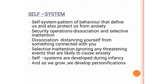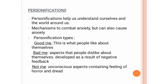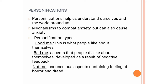Self-systems are developed early in life, during infancy, and as we grow we also develop what Sullivan refers to as personification. Personification helps us understand our self and the world around us — it is a mechanism to combat anxiety but can also cause anxiety. There are three possible personifications: good me, bad me, and not me. Good me is what people like about themselves. Bad me is what people dislike about themselves, developed as a result of negative feedback. Not me is an unconscious aspect containing feelings of horror.